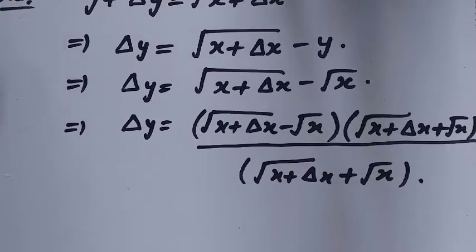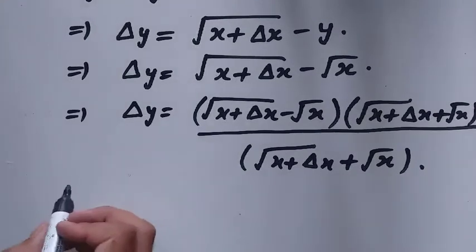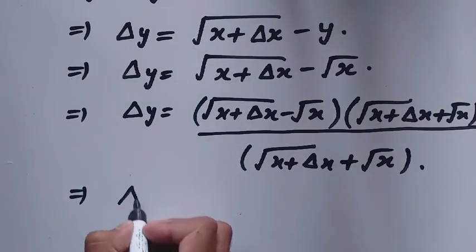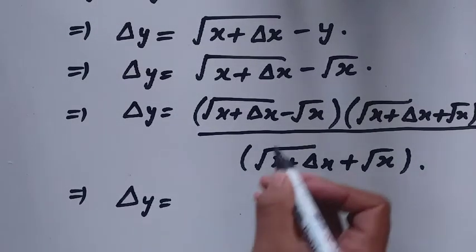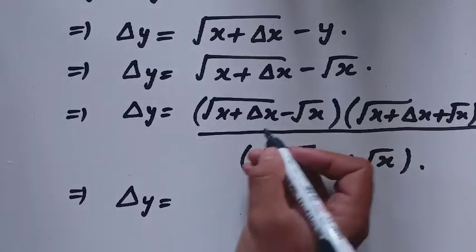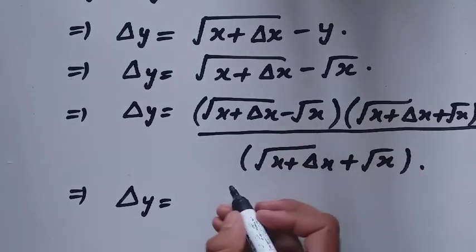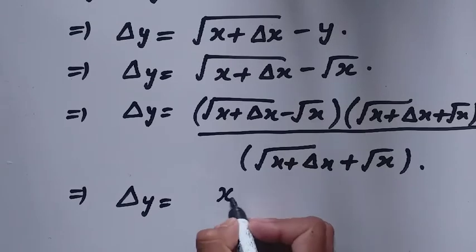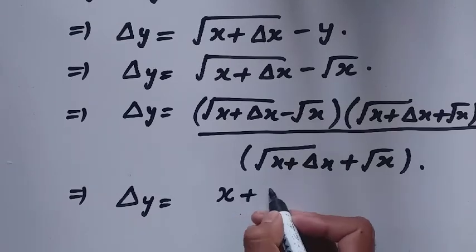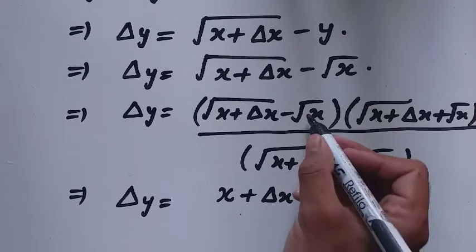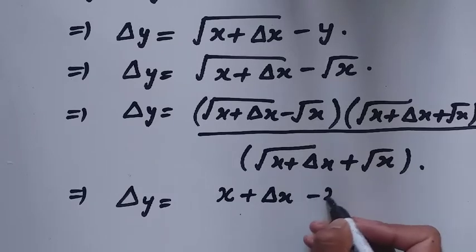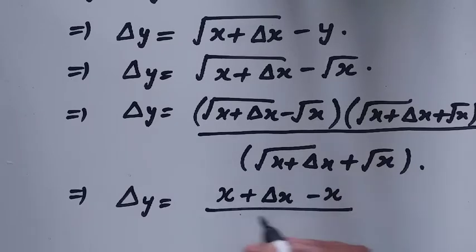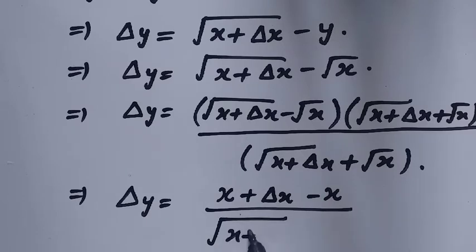When we multiply out, delta y equals x plus delta x minus x, all divided by under root of x plus delta x plus under root of x.